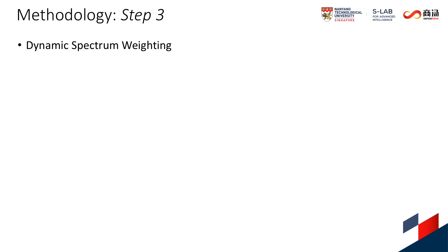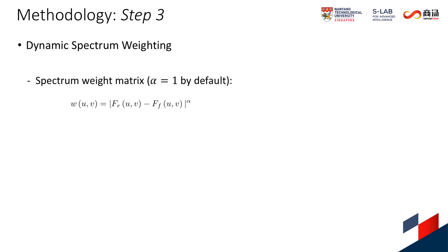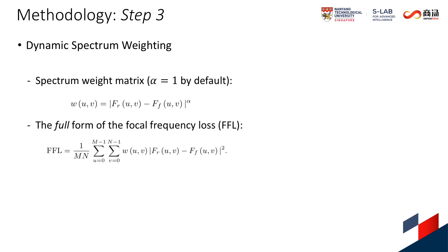The final step is called dynamic spectrum weighting. To cope with the frequency components that are hard to synthesize, we focus model training on them. We introduce a spectrum weight matrix to downweight easy frequencies. The matrix is dynamically determined by a non-uniform distribution on the current loss of each frequency during training, where alpha is the scaling factor for flexibility. By performing the Hadamard product of the spectrum weight matrix and frequency distance matrix, we have the full form of FFL.